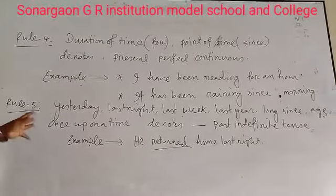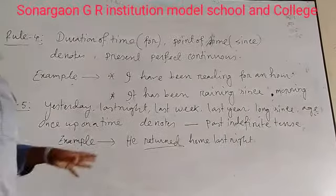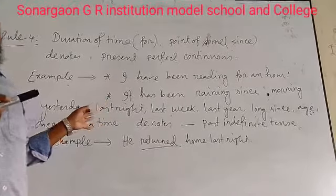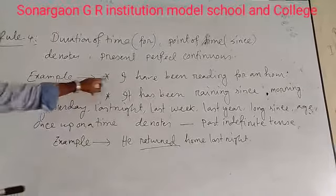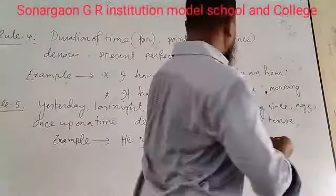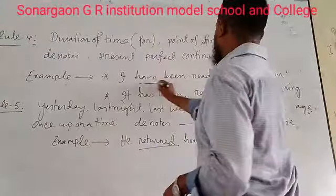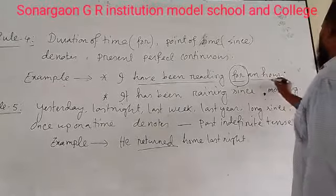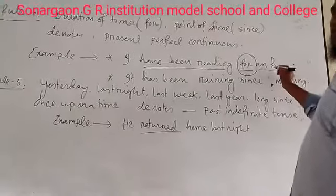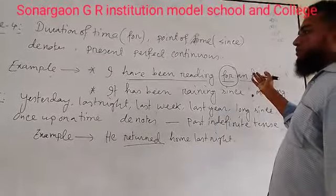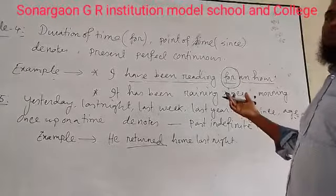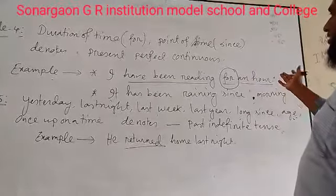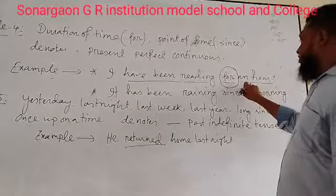This generates present perfect continuous tense. For example: 'I have been reading for an hour.' Here 'for' is used before 'an hour'. An hour is a duration of time — indefinite time, as an hour may be in any part of the day: morning, midday, evening, or night. So it is indefinite and called duration of time, hence 'for' is used. Another example: 'It has been raining since morning.' Here 'since' is used before 'morning'. Morning is a specific time of day, so it is a point of time. Both examples are present perfect continuous tense.